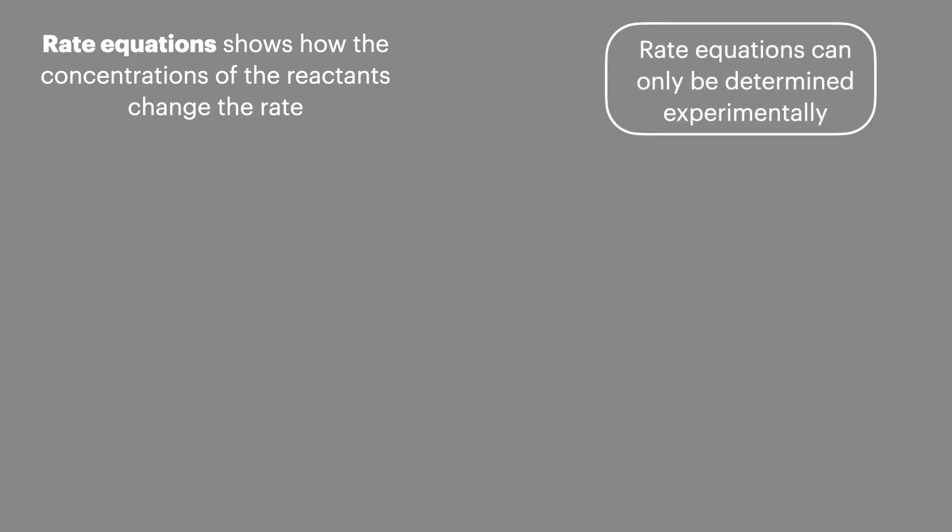As orders of reaction can only be determined experimentally rate equations must also be determined from experimental data. We start with the initial rate of reaction.